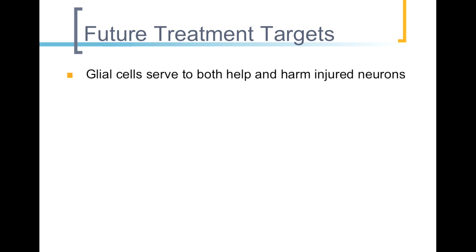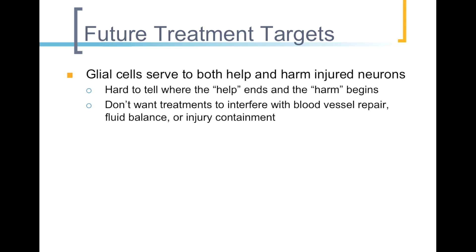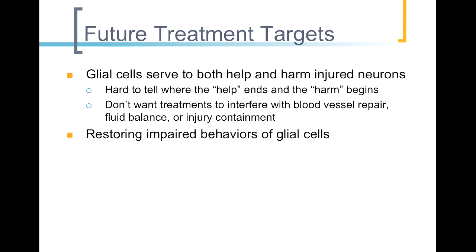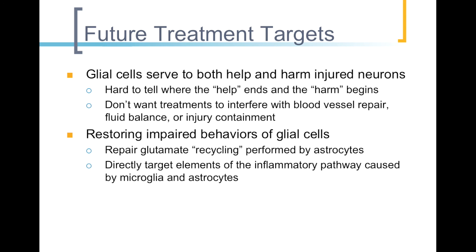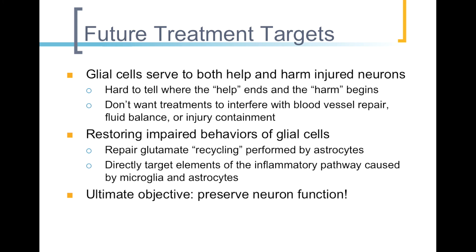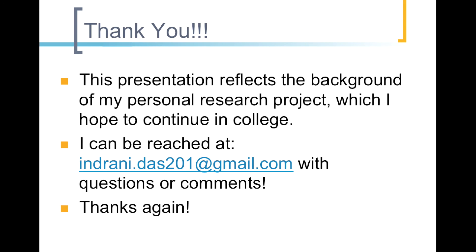Clearly, it's important to target the impaired function of glial cells, because it's hard to tell where their ability to help ends and their harm begins. We don't want treatments to interfere with blood vessel repair, or fluid balance, or injury containment, but we do want to restore the impaired behaviors of glial cells. One way to do this is by repairing glutamate recycling done by astrocytes, or by targeting elements of the inflammatory pathway caused by microglia and astrocytes. Ultimately, we want to preserve neuron function by preventing their death and ensuring proper signal.